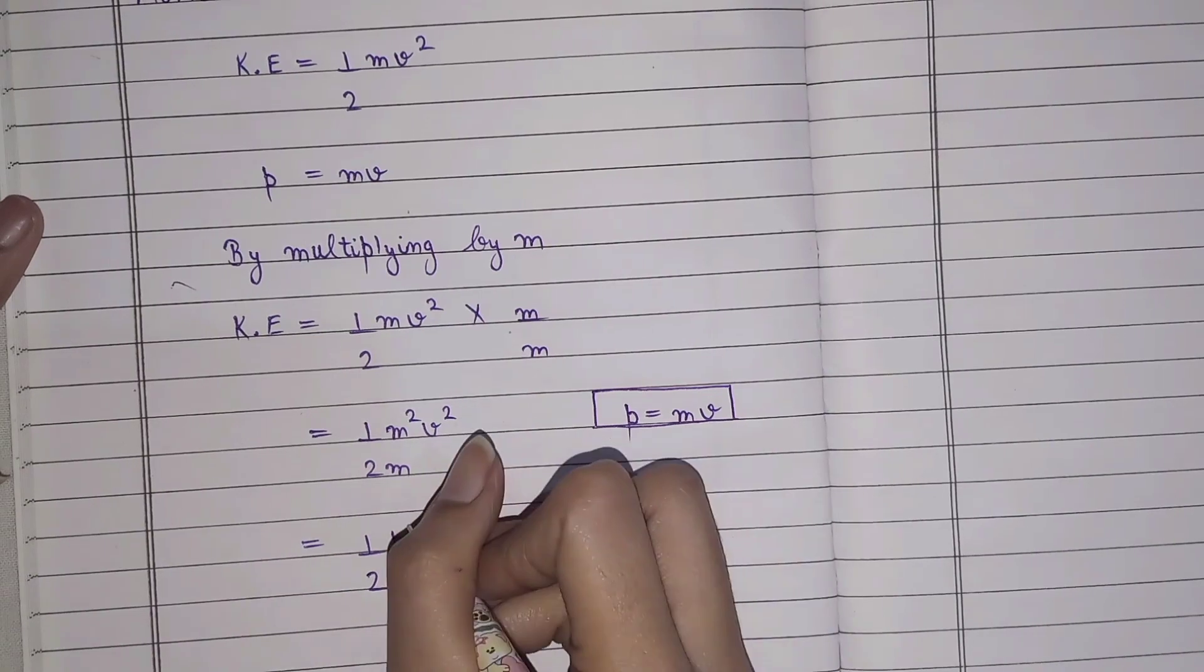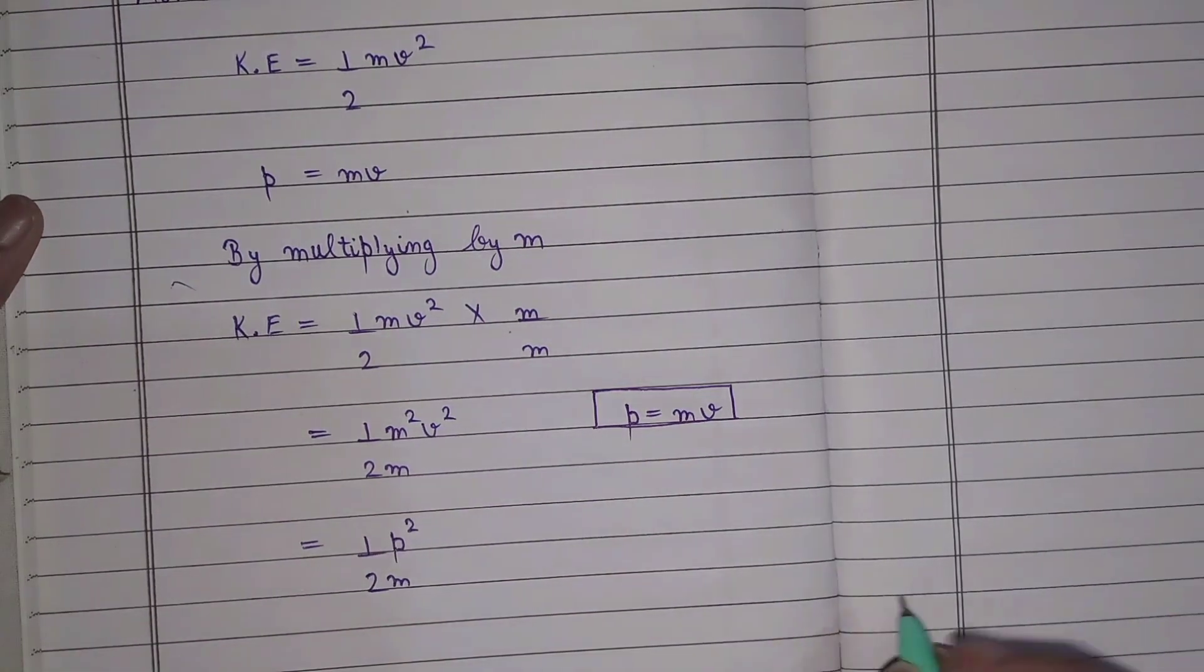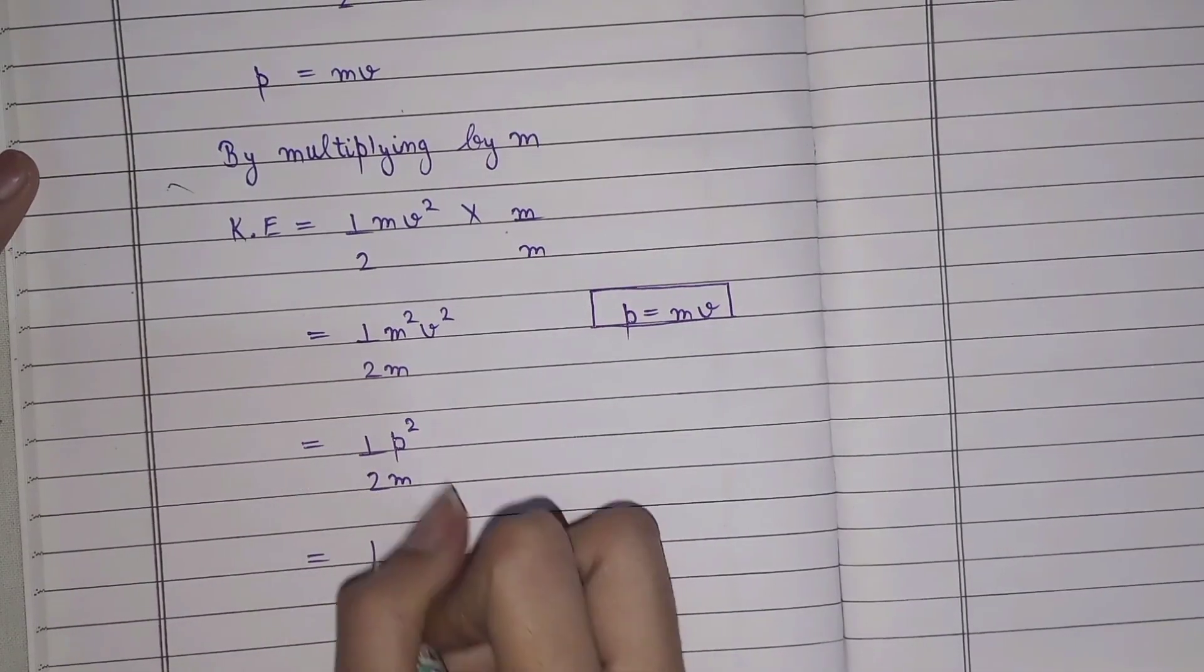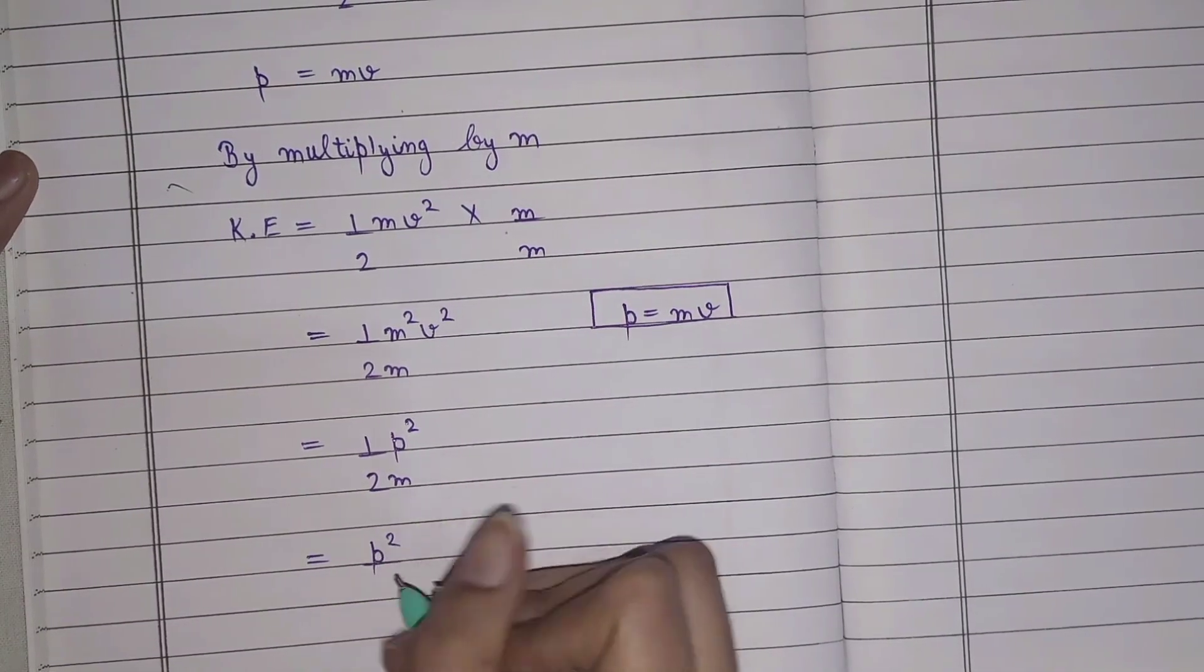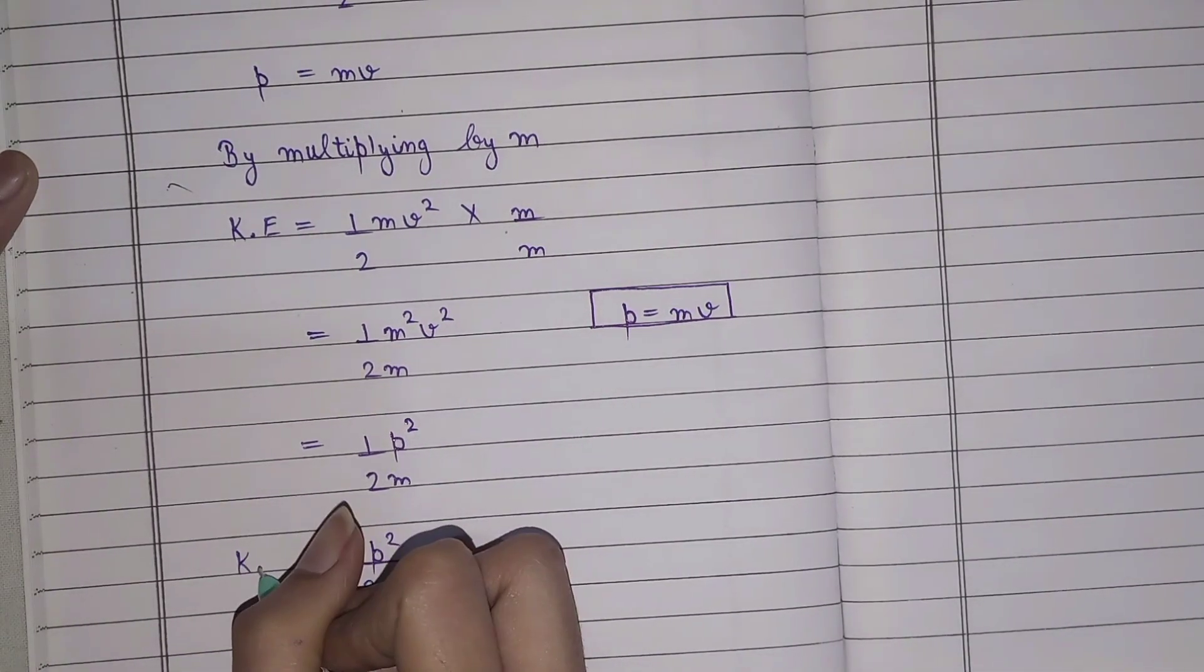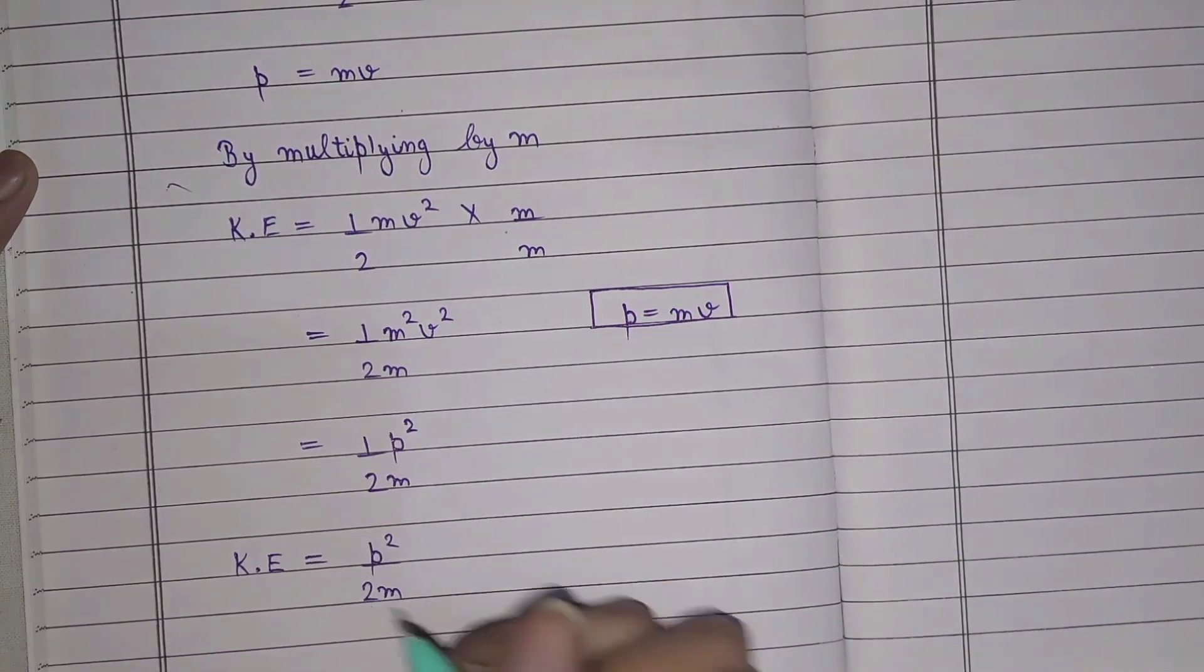Now if you simplify this further, you can write: p² = 2m × kinetic energy, or on the left hand side, kinetic energy.